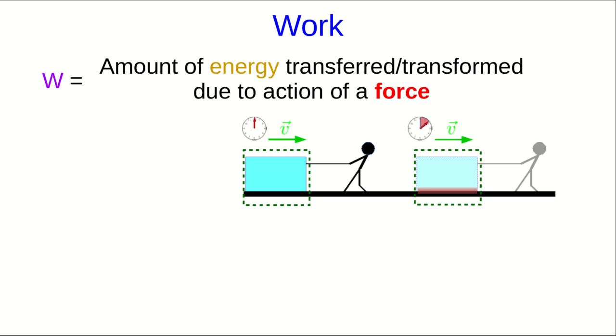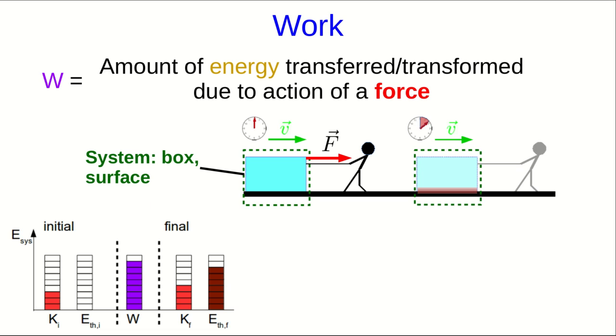And so, for example, if a person pulls something along, and we call the system this box and the surface it's sliding on, and the person pulls with some force F, then the system is going to gain energy. And it'll tend to gain both kinetic and thermal energy in this case, if the surface has friction.